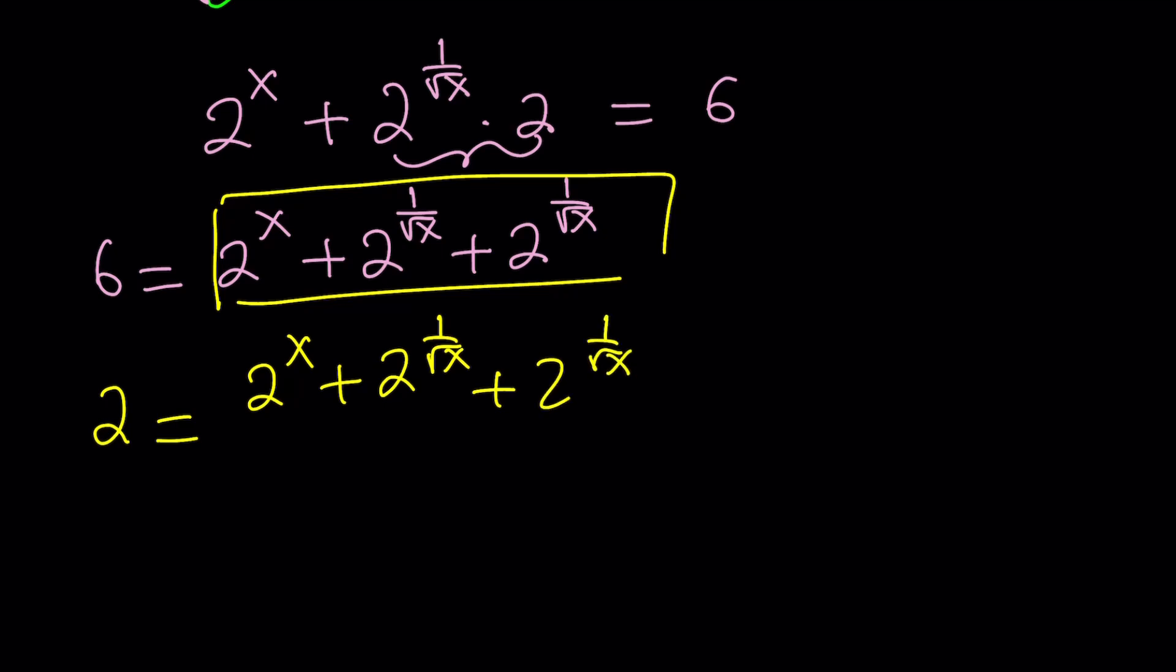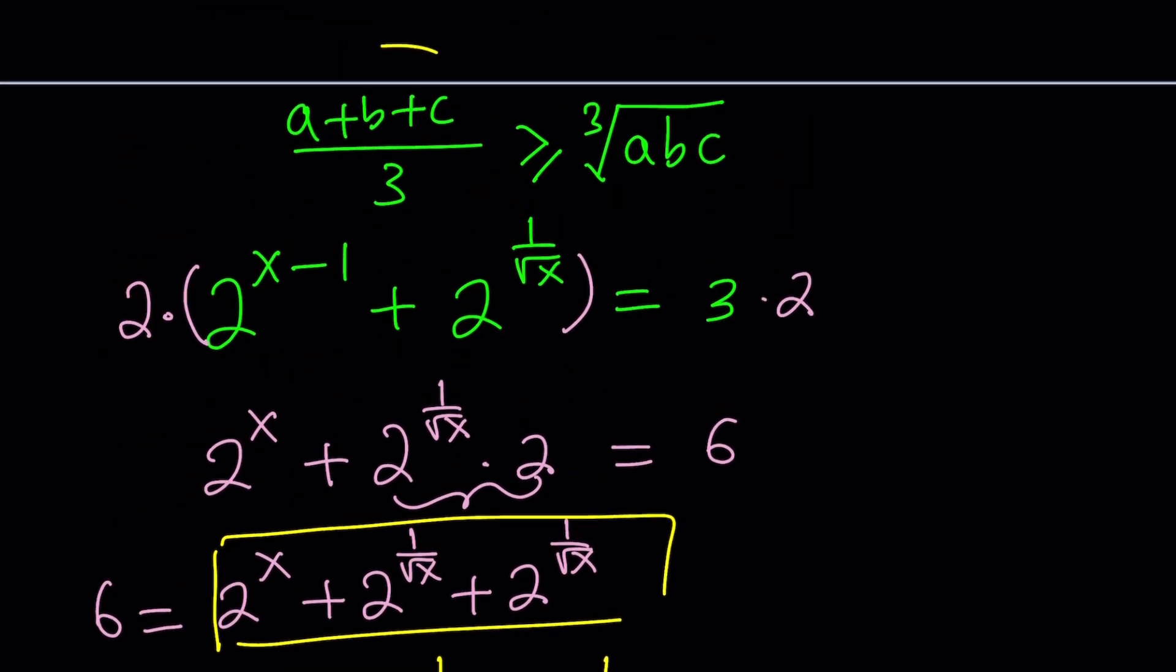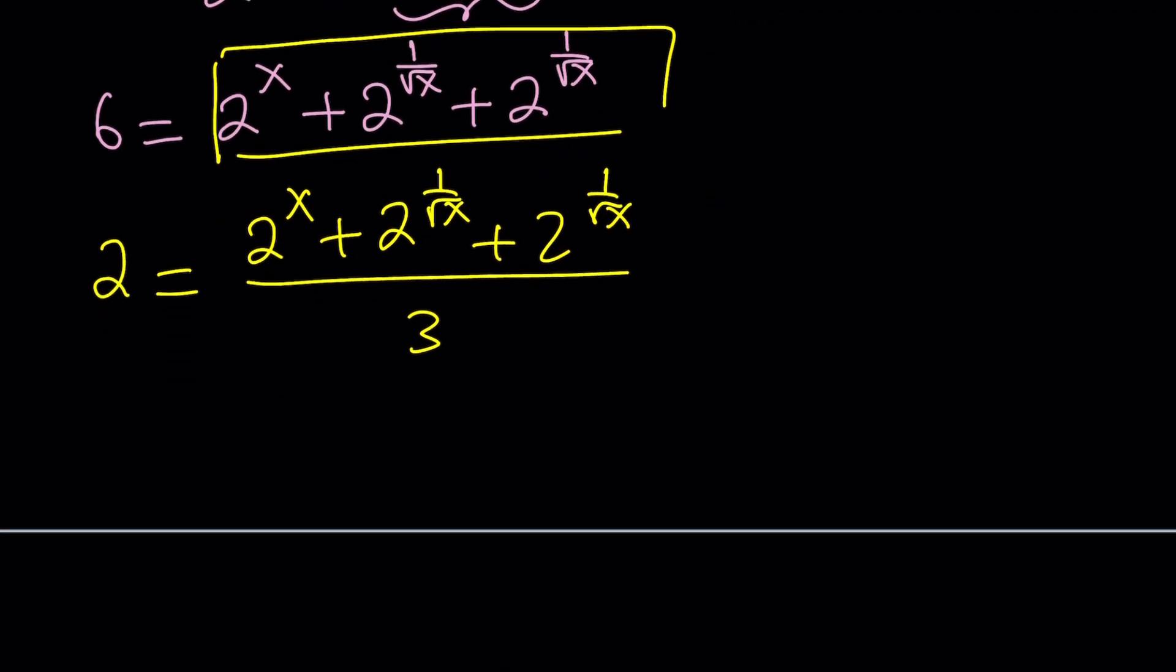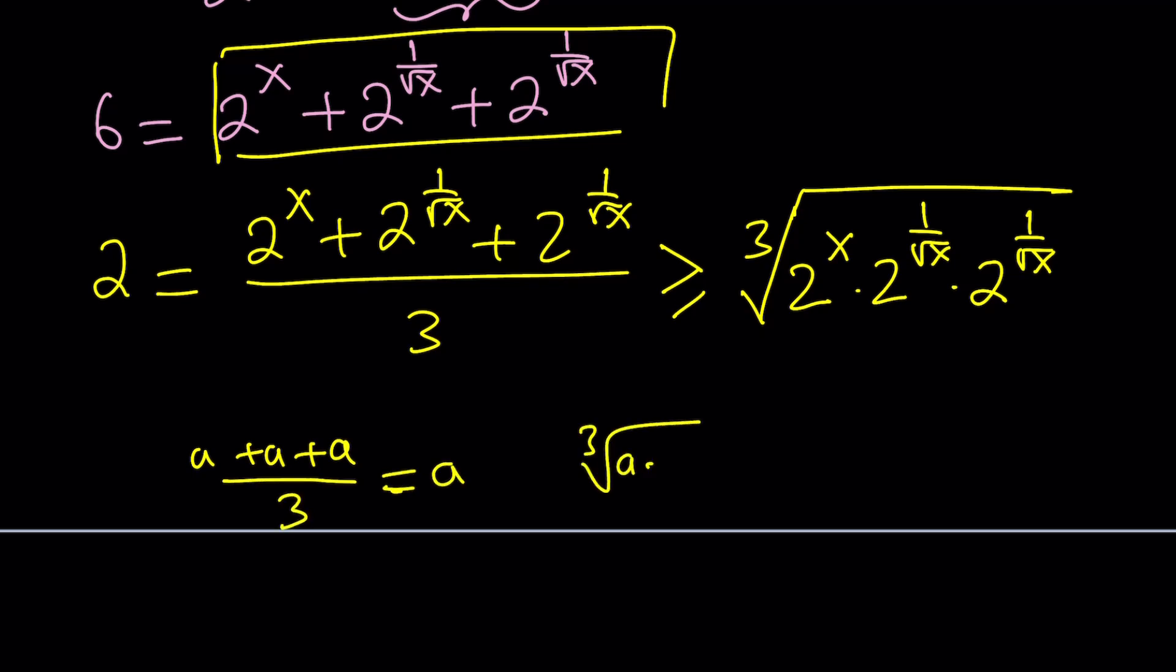And the reason behind dividing by 3 is because we want to look at the arithmetic mean and compare it to the geometric mean, AM, GM. So, obviously, this is going to be greater than or equal to the cube root of 2 to the power x times 2 to the power 1 over square root of x times 2 to the power 1 over square root of x. That's a cube root because there are 3 numbers. When is the equality obtained? The equality is obtained, actually, when each of these terms are the same. If you go ahead and take a, a, a, and average them arithmetically, you get a. If you go ahead and do the geometrically, you get a again. So, they're going to be equal in that case.